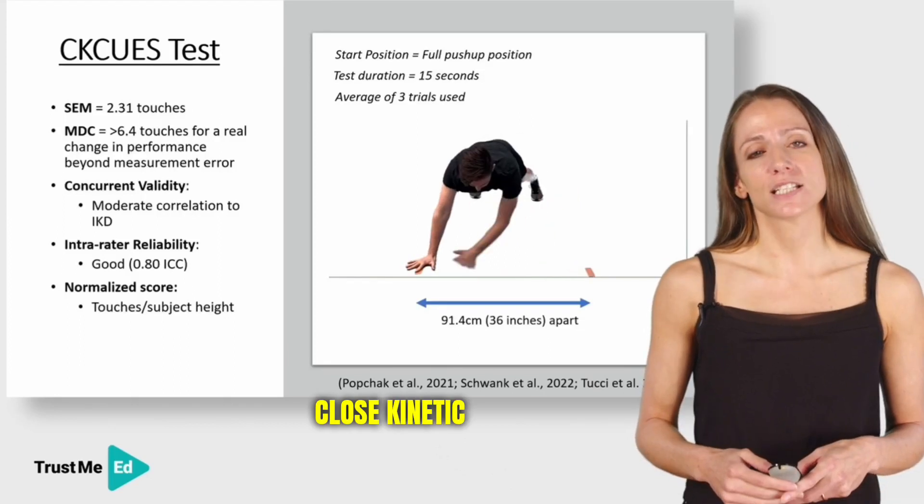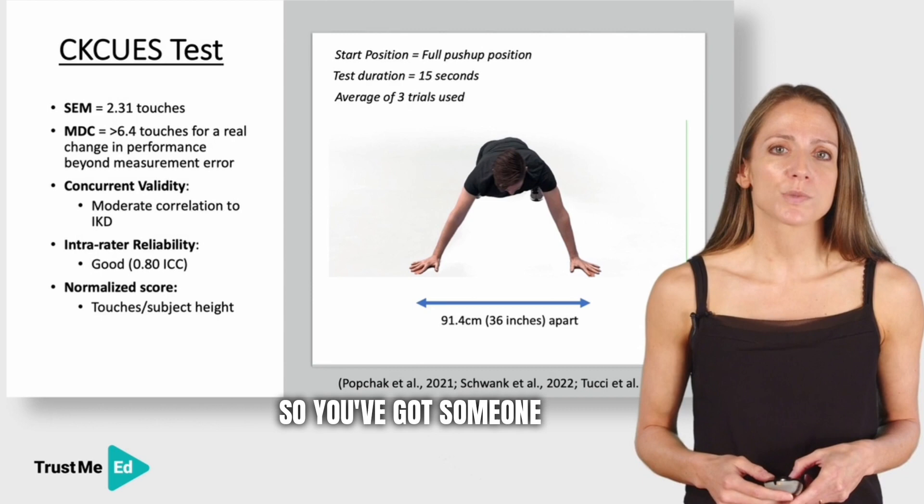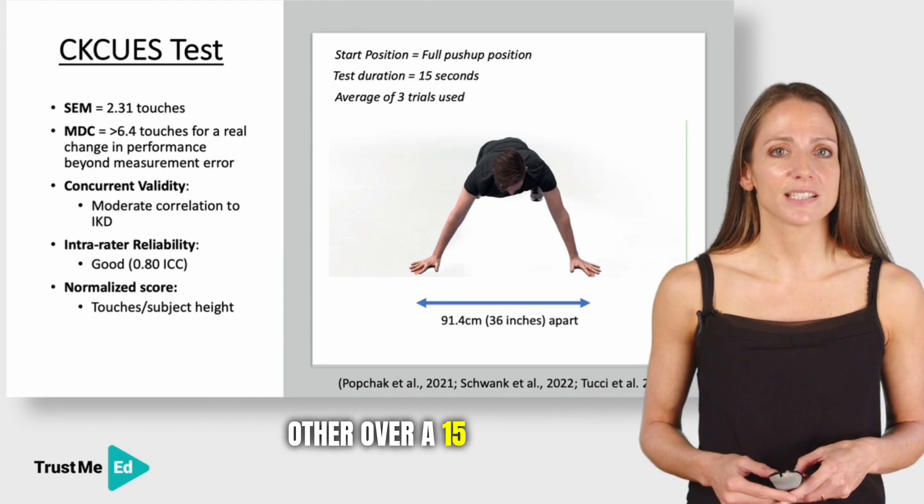The closed kinetic chain upper extremity test, which you can see demonstrated in this video. You've got someone in a full push-up position. You're timing the number of touches achieved from one side to the other over a 15-second period, and you're taking the average of three trials.